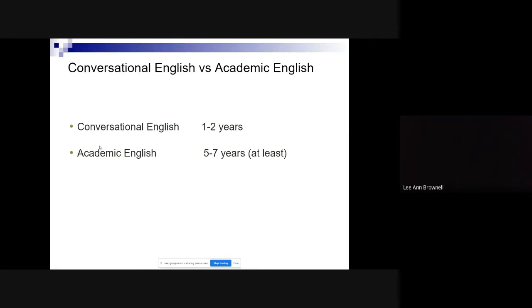Conversational English really only takes one to two years to acquire — it's functional, you can carry on a general conversation and understand what your friends are talking about. Academic English, on the other hand — the content, the curriculum — takes five to seven years at minimum, and that's the challenging part.